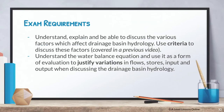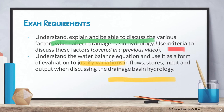To conclude, exam requirements: you need to understand, explain, and discuss the various factors affecting drainage basin hydrology — climate, human activity, soil and antecedent moisture conditions, and rock type. Always use criteria to justify. Also understand the water balance equation and use it as a form of evaluation to justify variations in flows, stores, inputs, and outputs — this shows examiners you're thinking beyond what the syllabus requires.